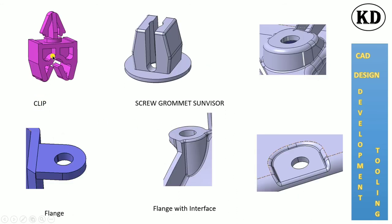Another fixation approach involves creating flanges. Flanges can be round-shaped or rectangular. There will also be impressions and depressions on the flange, which will provide an interface or cut-out interface for fixation with assembly directions.